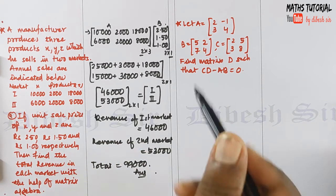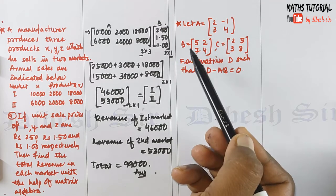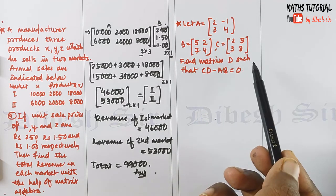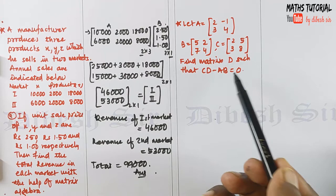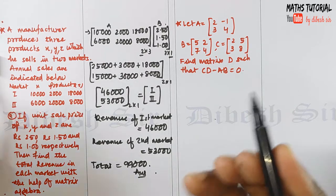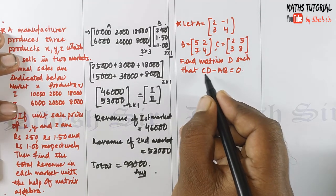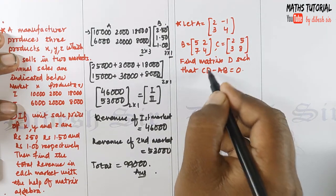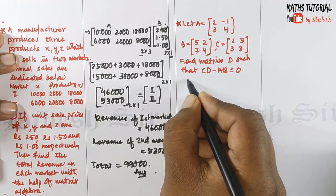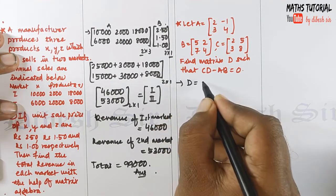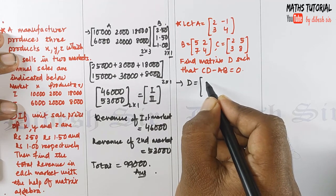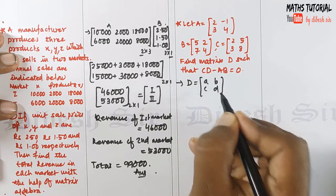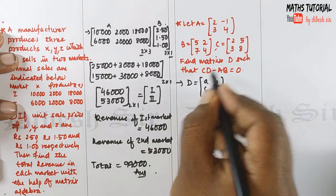Next question: let A, B, and C be given matrices. Find matrix D such that CD minus AB is equal to zero. So we need to multiply C with D. D is unknown, so let D equal the matrix with elements A, B, C, D. Multiply C with D.